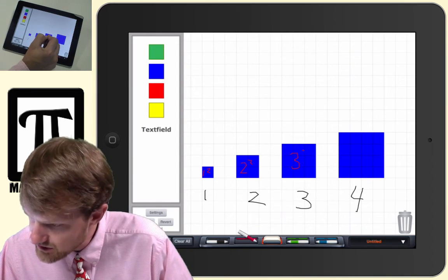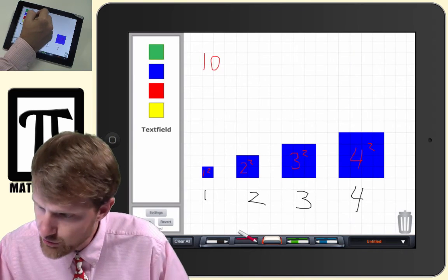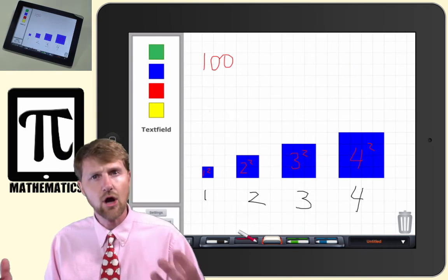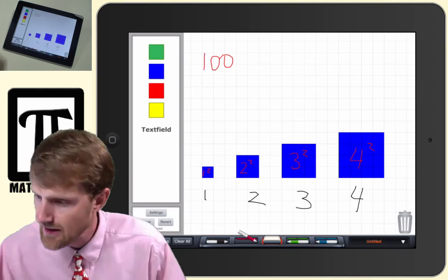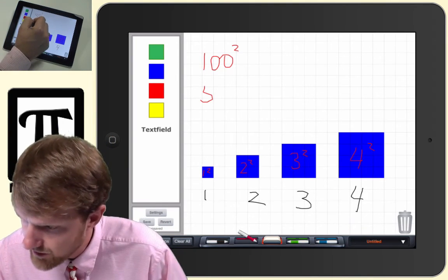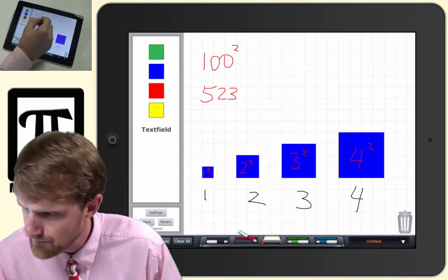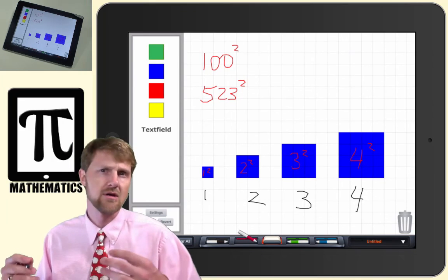And therefore, our way of writing that is going to be, this is one squared, and this is two squared, and this is three squared, and this is four squared. So, if I want to find 100, the sum of 100 consecutive odd numbers, it's going to be 100 squared. If I want to find 523, the sum of 523 consecutive odd numbers, it's 523 squared.